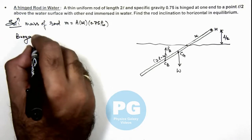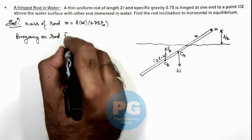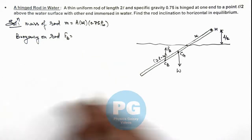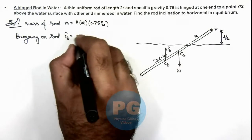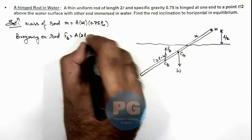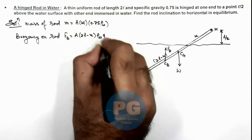If we calculate the buoyancy on rod, then we can write the buoyancy force is given by the weight of liquid displaced by the submerged part of rod, which can be written as A times (2l minus x) times density of water times g.